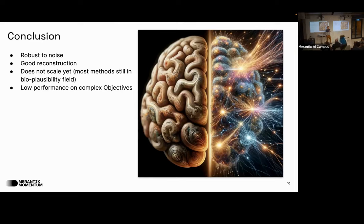Q: Do they do any performance evaluation in terms of inference speed? A: They still basically do backpropagation, just calculating the gradient differently. On inference it should be the same since the forward pass is unchanged. They implemented it using PyTorch hooks to substitute the backward weights for the forward weights during gradient computation. Forward alignment with random weights should be faster since you skip learning the backward weights.